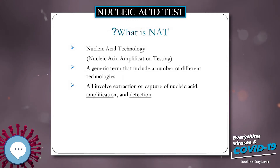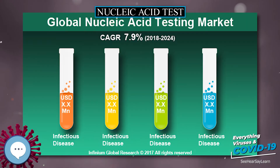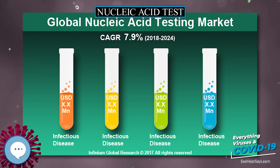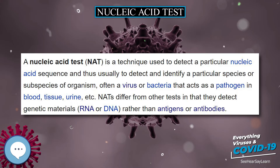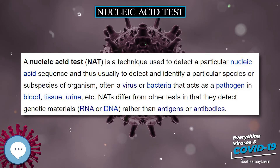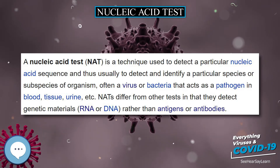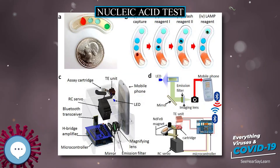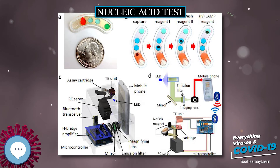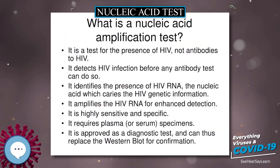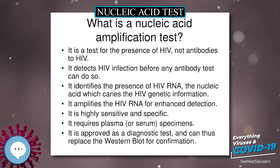Virtually all nucleic acid amplification methods and detection technologies use the specificity of Watson-Crick base pairing. Single-stranded probe or primer molecules capture DNA or RNA target molecules of complementary strands. Therefore, the design of probe strands is highly significant to raise the sensitivity and specificity of the detection.